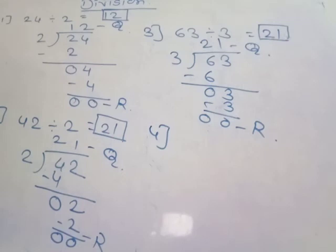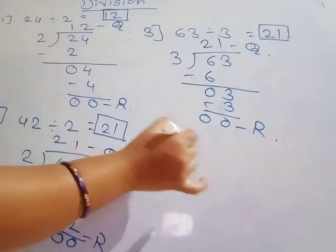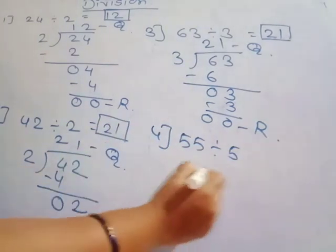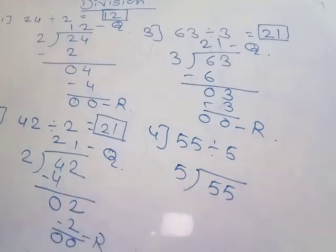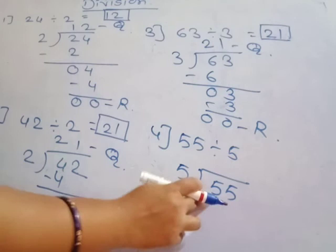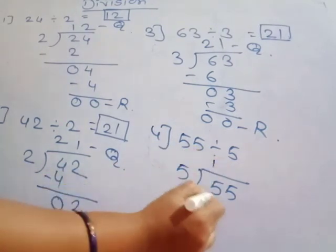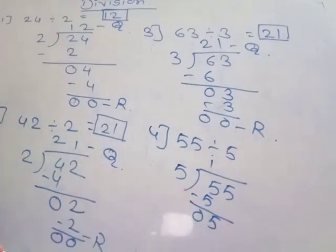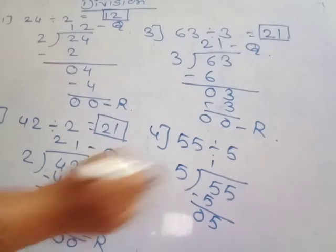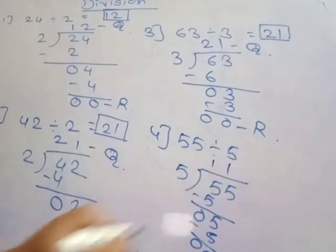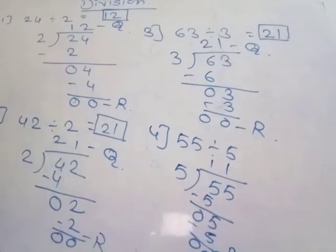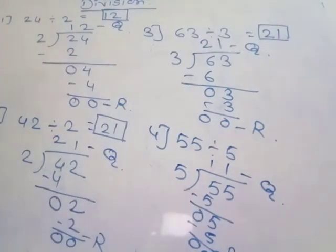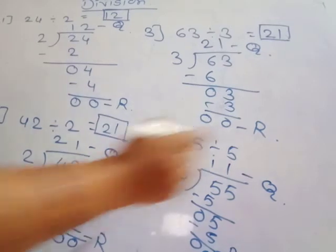Fourth example: 55 divided by 5. Fifty-five is the two-digit dividend divided by the one-digit number 5. Firstly divide the ten's place number: 5 divided by 5 equals 1, remainder zero. Then take the unit's place number 5. Again divide: 5 divided by 5 equals 1, remainder zero. The quotient is 11 and the remainder is zero. So 55 divided by 5 is equal to 11.